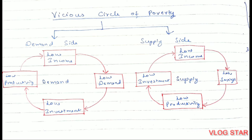The vicious circle of poverty has two sides: the demand side and the supply side. On the demand side, people of underdeveloped countries have low income, because of which demand for goods and services is also less. Less demand leads to less production, causing production units to shut down, which results in unemployment and again low income. We can break this by increasing investment in different sectors, which will increase employment, boost demand, motivate entrepreneurs to earn profit, and reinvest in production.